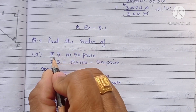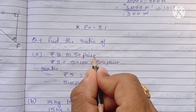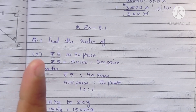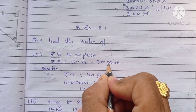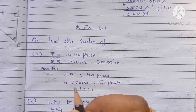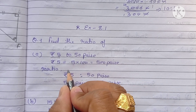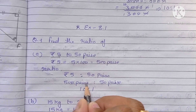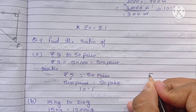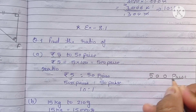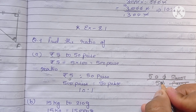Find the ratio of rupees 5 to 50 paise. We have 5 rupees and 50 paise. First we convert: 1 rupee equals 100 paise, so 5 rupees equals 500 paise. We write 500 upon 50, which gives us the ratio 10:1.